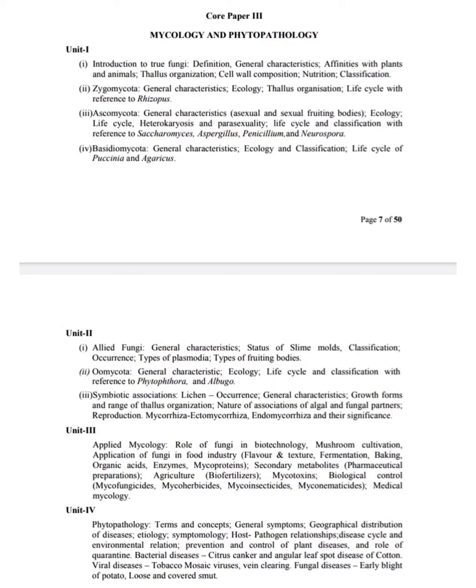What is heterokaryosis? General characteristics of Basidiomycota. Types of mycelium. Basidium and its types. Classification of Basidiomycota. What is basidiocarp? Characteristics of basidiospores. Fruiting bodies in Agaricus. What are slime molds? Different types of slime molds. Occurrence of slime molds. General characteristics of slime molds.